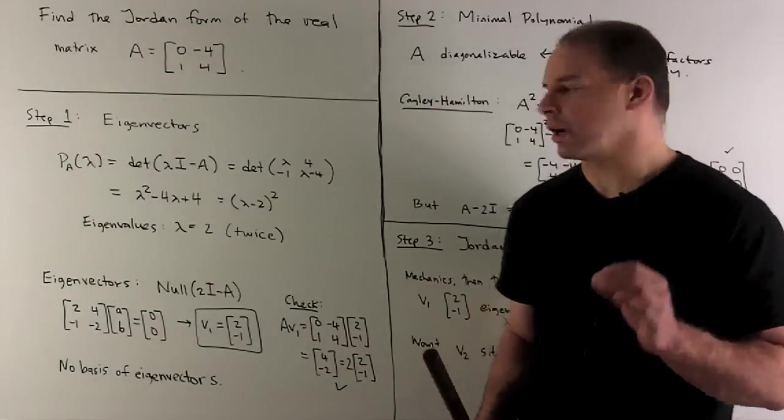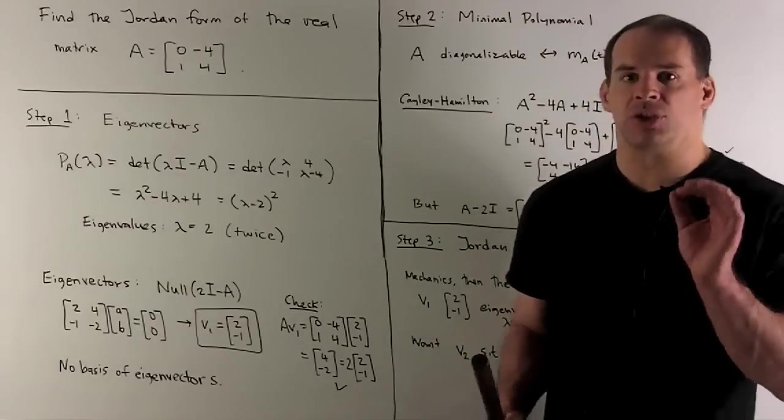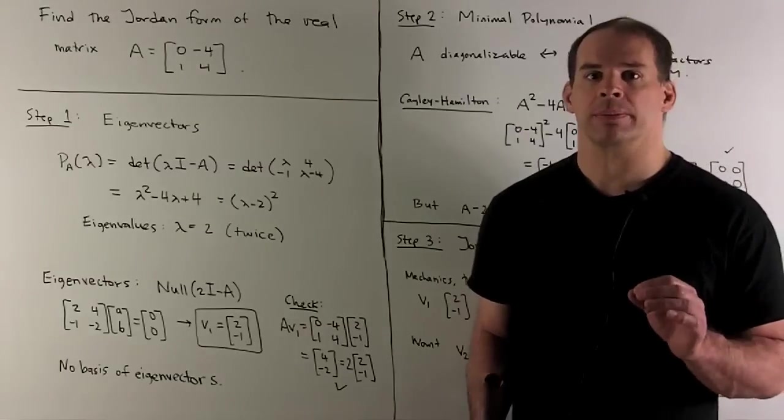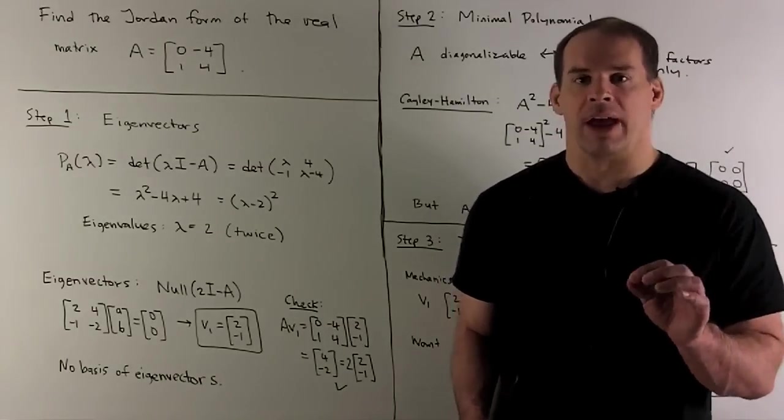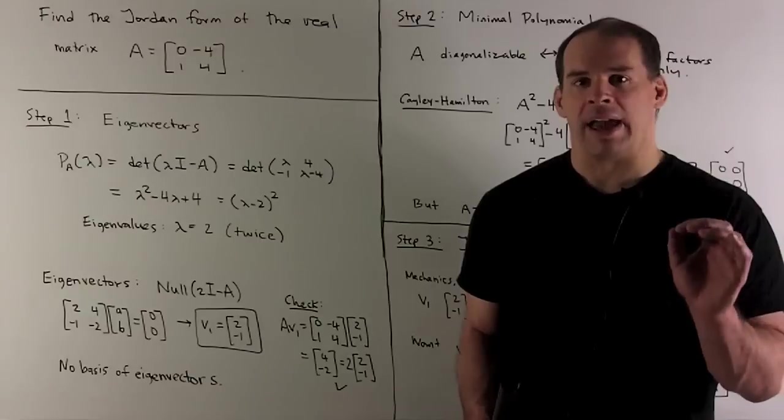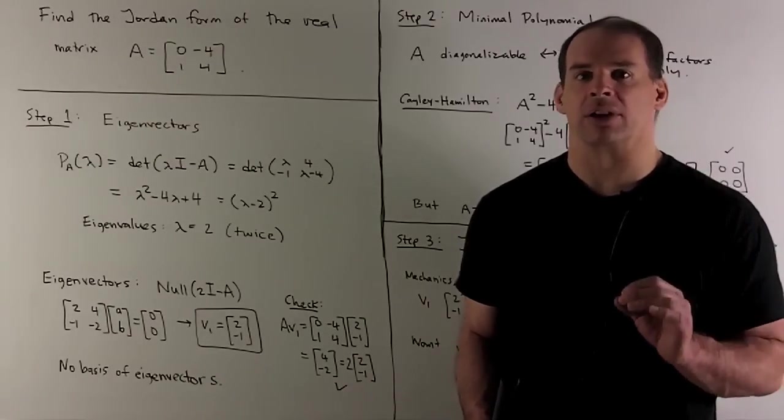Of course, I check my work, so we apply A to V1, we work it out, and then I get 2 times V1, so my check works. Now, here's the problem. We only have one eigenvalue, one eigenvector. I'm not going to be able to find another basis vector that's an eigenvector.